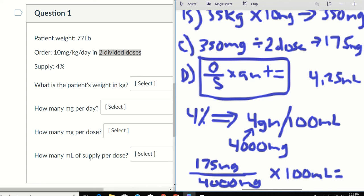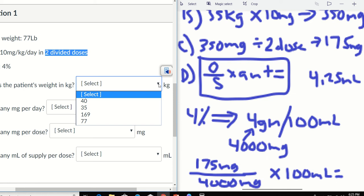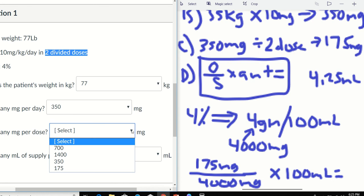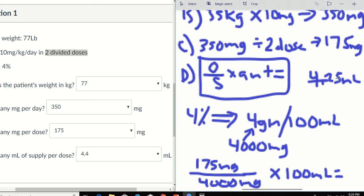Alright, let's see. Let's see if it's an answer choice. So patient's weight was 77. Amount per day was 350. Amount per dose was 175. And we got a 4.25? 4.75? Oh, 4.375. Okay, so it's closer to 4.4. So 4.375. So closer to 4.4. Alright, let's submit this guy.